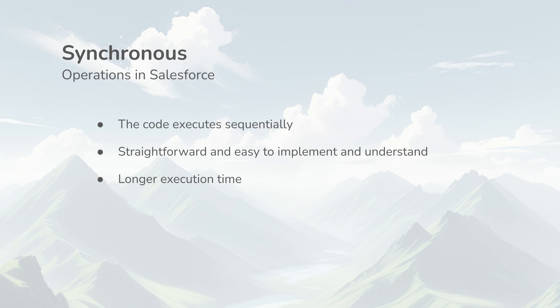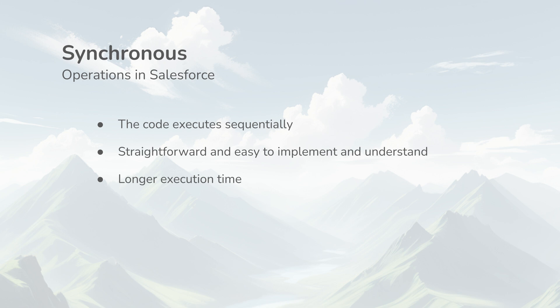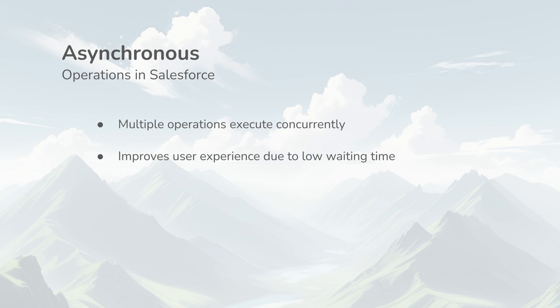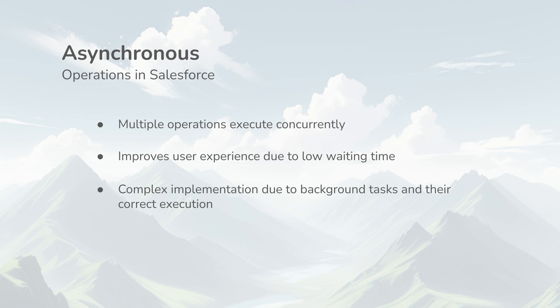This is where asynchronous execution comes into play. Asynchronous execution allows multiple operations to run concurrently or in parallel. As we saw in the example, Sam did shopping at the supermarket while the mechanic got his car fixed at the same time. Asynchronous execution improves the user experience by reducing wait times and allows our system to handle multiple tasks simultaneously. However, it also introduces complexity because we need to manage these background tasks and ensure they complete successfully.